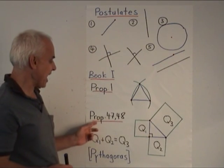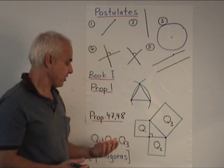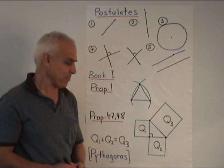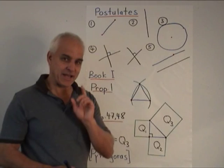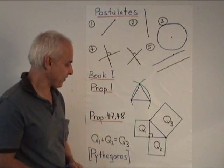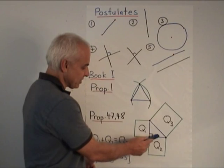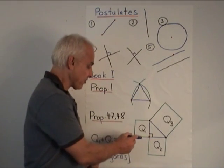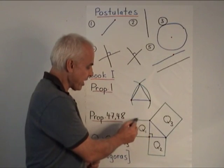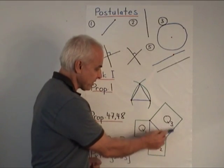There are many other propositions. The last two in this book are concerning the most fundamental theorem in mathematics, that of Pythagoras. And it's very important to understand how Euclid thought about Pythagoras. So here's a right triangle, meaning that these two sides are perpendicular. Pythagoras is a statement about three areas, areas of squares built on these three sides.